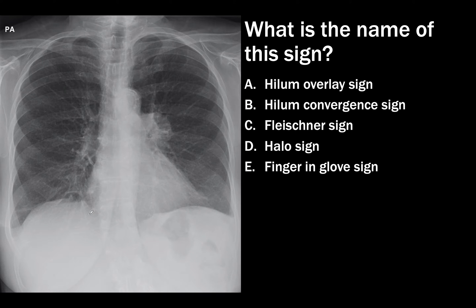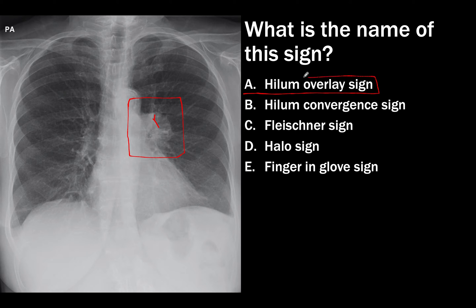Case 35. The question is: what is the name of this sign? The abnormality looks superimposed over the left hilum. The key question is whether this abnormality is in the hilum or somewhere else — anterior or posterior to it. We can see the hilar vessel here, very well defined, despite the abnormality being right on top of the hilum. Therefore, this is a positive hilum overlay sign, meaning the mass or consolidation is either anterior or posterior to the hilum. The hilum convergence sign attempts to identify whether a hilar lesion is due to vasculature or a hilar mass — so that's not correct.